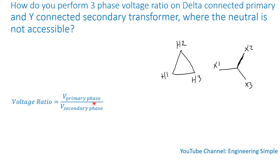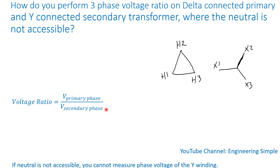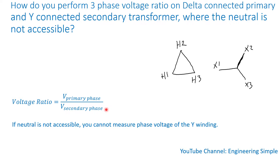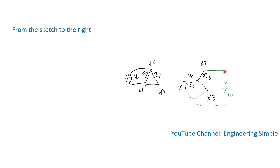The general formula for voltage ratio is the phase voltage of the primary side divided by the phase voltage of the secondary side. Because we have a delta and a Y: for the delta, the phase voltage is the same as line-to-line. For the Y, you have to use the phase voltage, or you can use line-to-line divided by square root of three — because if you don't, you'll be off by a factor of square root of three. Since the neutral is not accessible, you cannot measure the phase voltage of the Y winding.